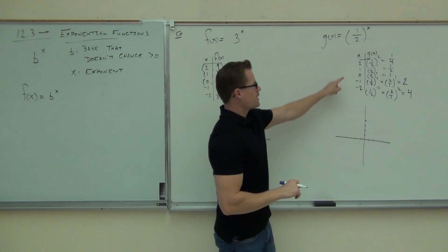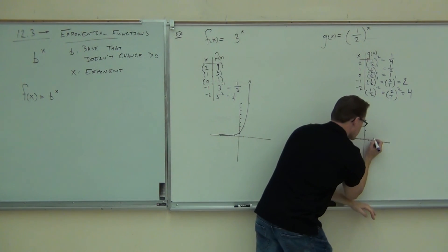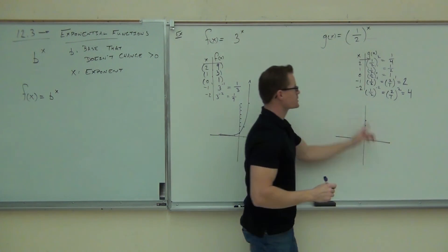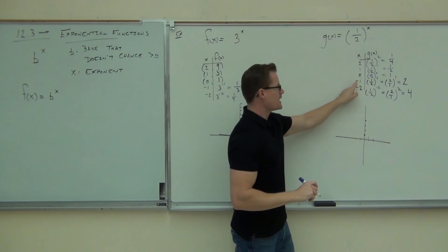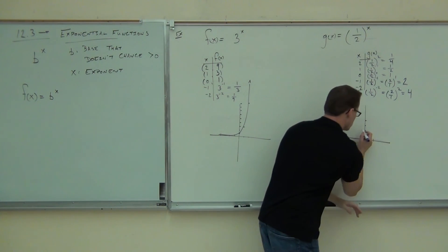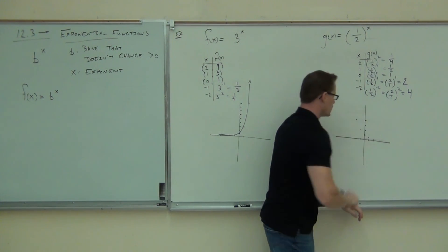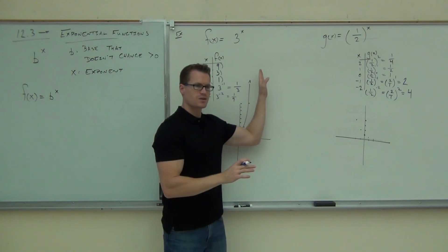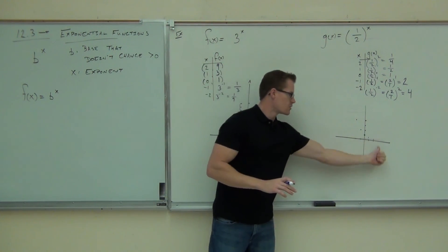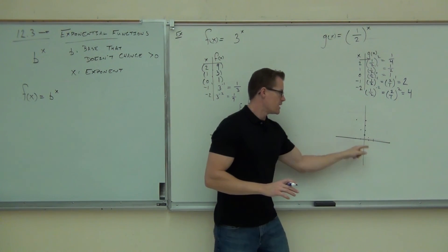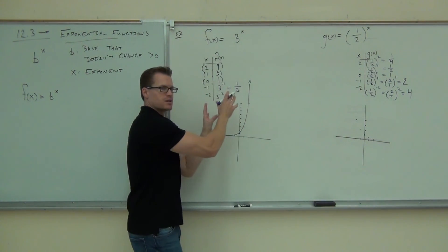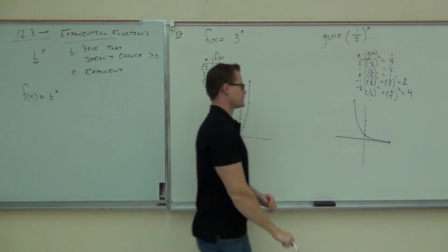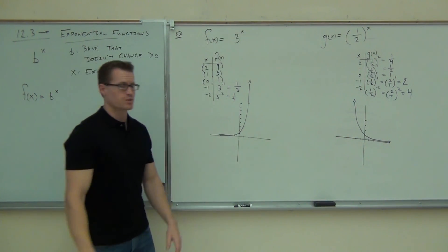Let's graph it. Going to two, one-fourth — that's right there. Going to one, one-half — slightly higher. Going to zero, one — that's here. Going to negative one, I'm getting two. Going to negative two, I'm getting four. Do you see what this is doing? It's almost like the opposite of the three-to-the-X graph — almost like a reflection.